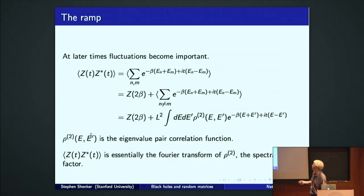Now at later times, fluctuations become important. You care about what Z and Z star are doing. If you separate out the N equals M term, you just get Z of two beta. But the N not equal to M term is given by the eigenvalue, eigenvalue pair correlation function, essentially Fourier transformed. So essentially, ZZ star is the Fourier transform of the eigenvalue pair correlation function. And this is what's called the spectral form factor. Okay? So what you're mapping out in time is the Fourier transform of how eigenvalues are correlated.